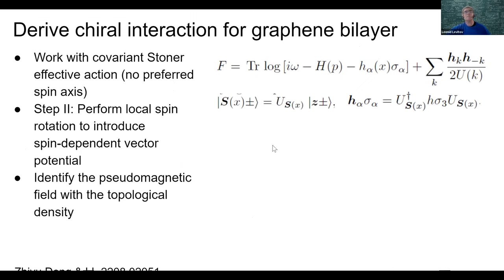The next thing is to integrate out fermions with a free-particle Hamiltonian in which the ordering field h is an arbitrary position-dependent field, giving the free energy shown here, written with no preferred spin quantization axis — so it's fully coherent. Then we can perform a local spin rotation to align spins with the z-axis.